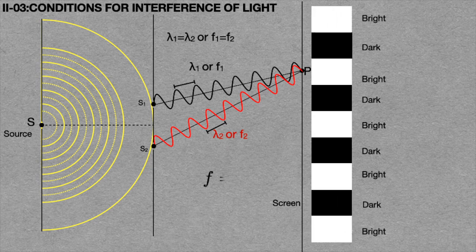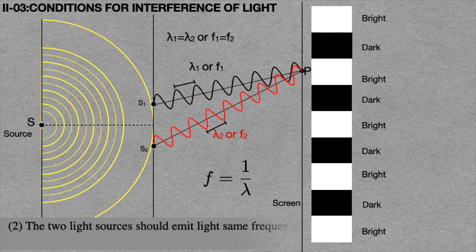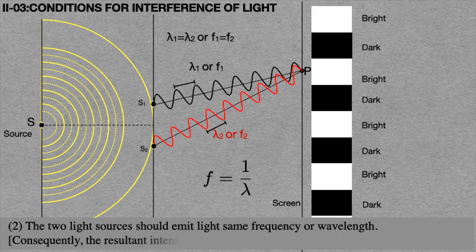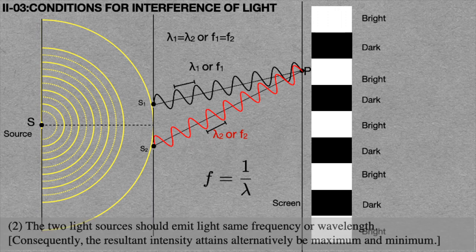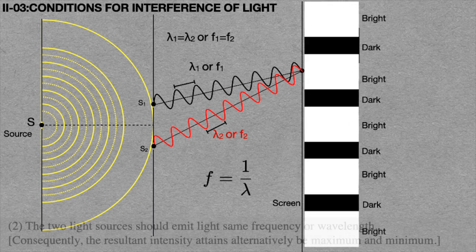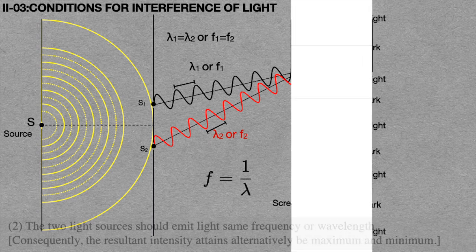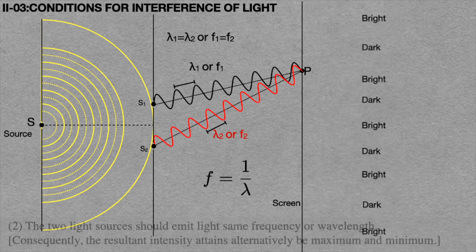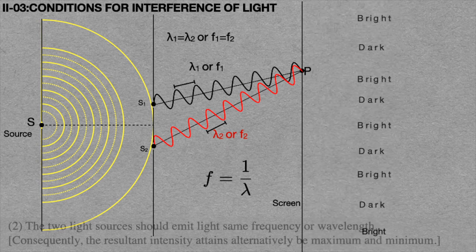The wavelength of light is inversely proportional to the frequency of light. That is why the second condition includes both wavelength and frequency equations — the two light sources should emit light of the same frequency or wavelength. Consequently, the resultant intensity attains alternately a maximum and minimum. In case the two sources do not have the same frequency or wavelength, no stable interference pattern is formed on the screen.